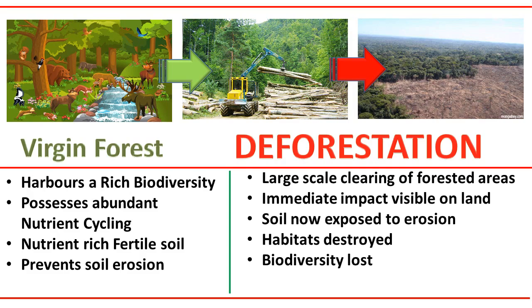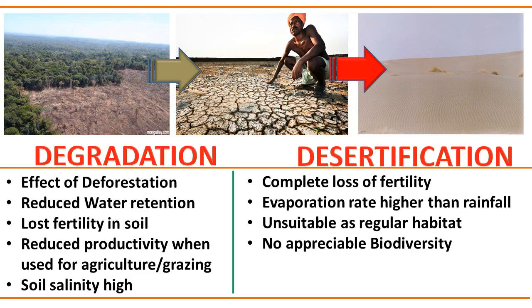Regardless of the ecological services rendered, forest resources are continuously consumed for human use. Large-scale clearing of forested areas for human use is called deforestation. The immediate effects are visually evident: the soil previously protected by roots is now exposed to erosion, habitats of wildlife are immediately destroyed, and biodiversity in the area is permanently lost. The effects of deforestation resulting in fertility loss directly correspond to a loss in productivity of the land, especially when used for agriculture, leading to land degradation. The land becomes unsuitable for plant growth or water retention and eventually becomes a desert — a process called desertification.